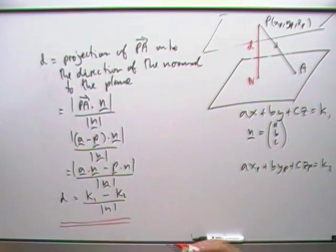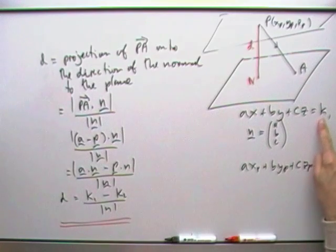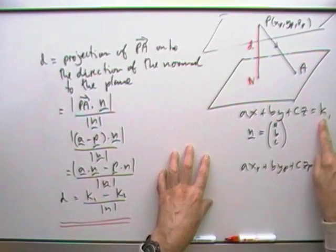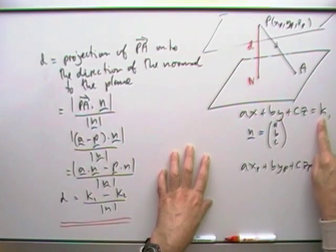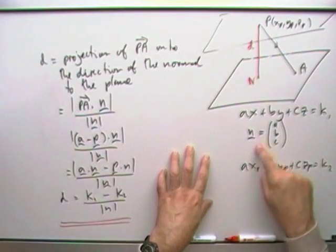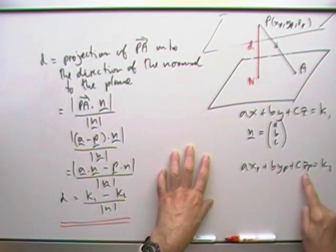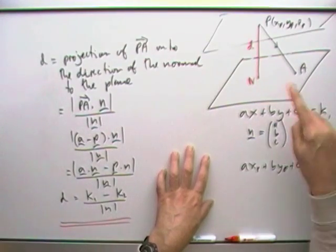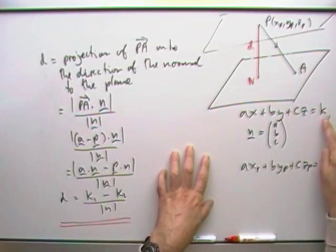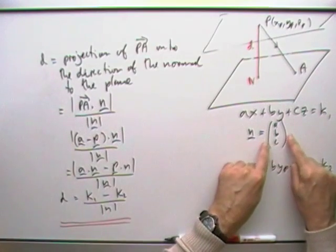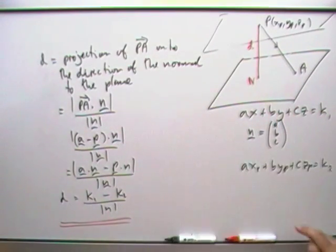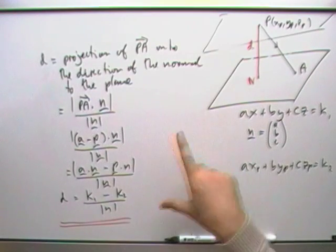It simply means that the number at the end of the plane equation defines a distance — a distance between planes, or a distance between the plane and the origin. At the origin the coordinates are all zero, so any plane's distance to the origin is just the constant at the end divided by the length of the normal vector defining it. I'll do two examples.